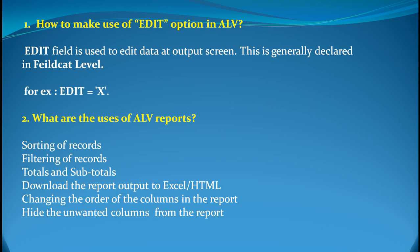The second question is: what are the uses of ALV reports? ALV reports are used for sorting of records, they are used for filtering, they are used for totals and subtotals, they are used for downloading the report to Excel or HTML as well, and they are also used for changing the order of columns in the report or hiding any unwanted columns. For all these kinds of activities, we use ALV reports.